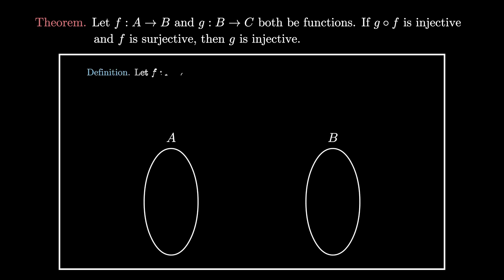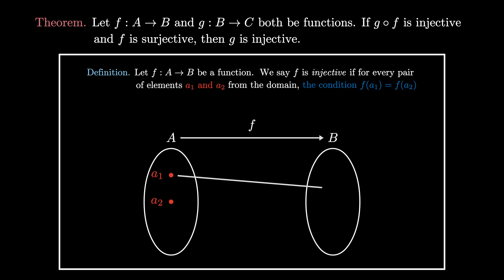Recall that if f is a function between two sets A and B, then we call f an injective function if for every pair of elements a₁ and a₂ in the domain, the condition that a₁ and a₂ map to the same element in the codomain B must imply that a₁ and a₂ are exactly the same element of A, so we can't have two elements mapping to one.